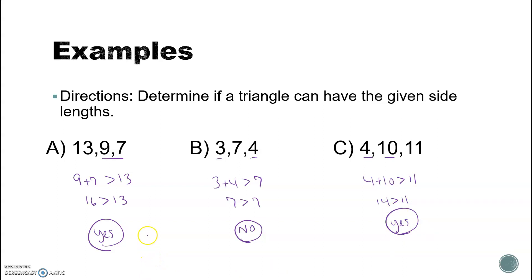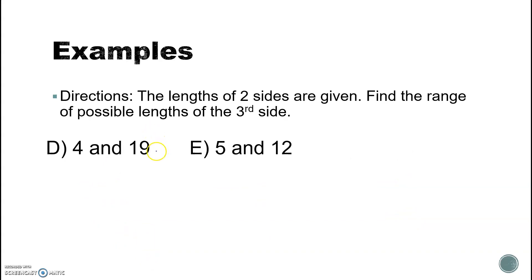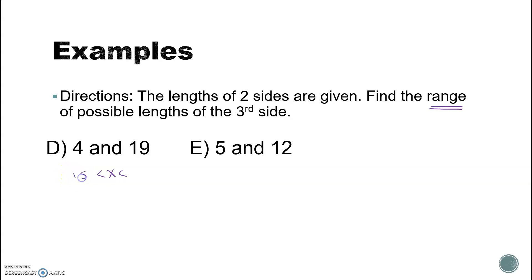That's the triangle inequality theorem. You can also find the range of possible lengths for a third side when given two sides. To find the lower limit, subtract the two given sides; to find the upper limit, add them. So for sides 19 and 4, the lower limit is nineteen minus four and the upper limit is nineteen plus four.